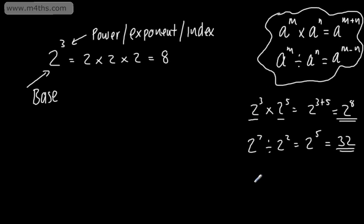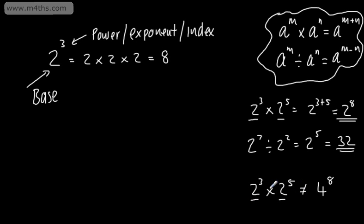One key error students make is writing 2 to the power of 3 multiplied by 2 to the power of 5 as 4 to the power of 8. This is incorrect — when we're multiplying, the bases remain the same. What we're going to do now is look at some examples that get progressively harder. When multiplying with the same bases, we add the powers; when dividing with the same bases, we subtract the powers.